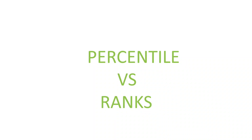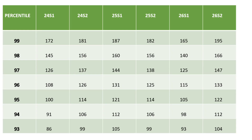Hi friends, welcome to Call a Solution. This is a detailed analysis of percentile versus ranks, shown shift-wise and day-wise. The column is percentile, and the rows are shifts: 24 shift 1, 24 shift 2, 25 shift 1, 25 shift 2, 26 shift 1, and shift 2.